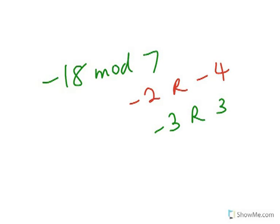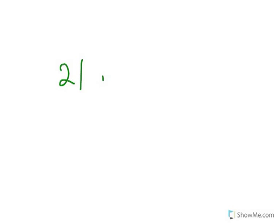That's the general idea of finding the modulo. Let's do one more positive example. What if we have 21 mod 3? In this case 3 can divide 21 evenly — that's 7 remainder 0. The modulo is always the remainder, so 21 mod 3 equals 0. Thank you so much students for listening. I hope you understood, and have a great day.